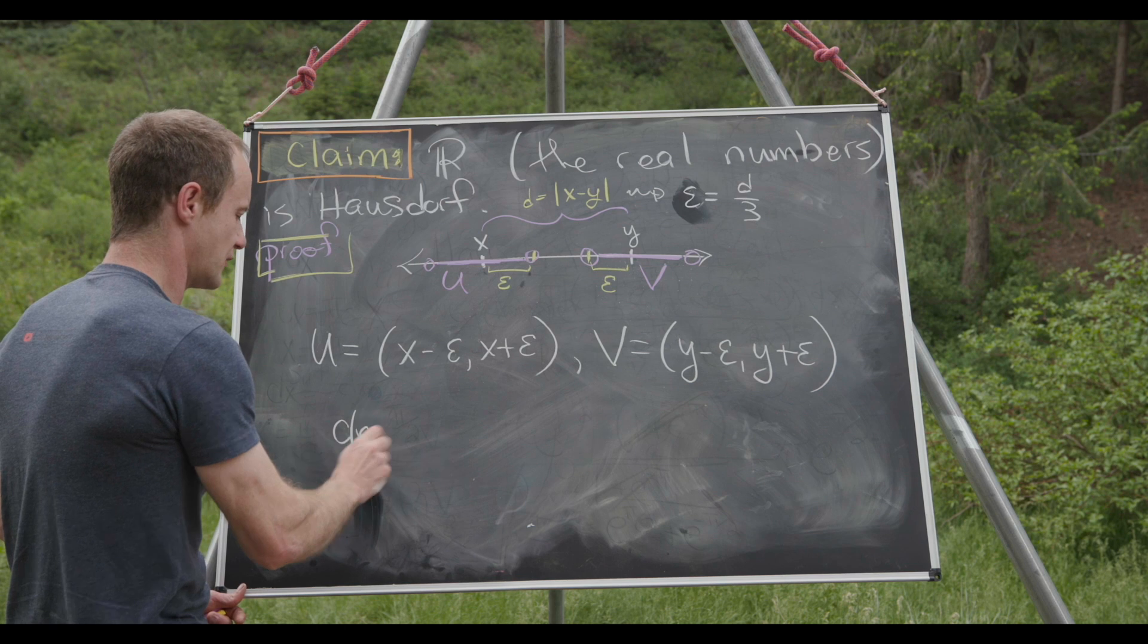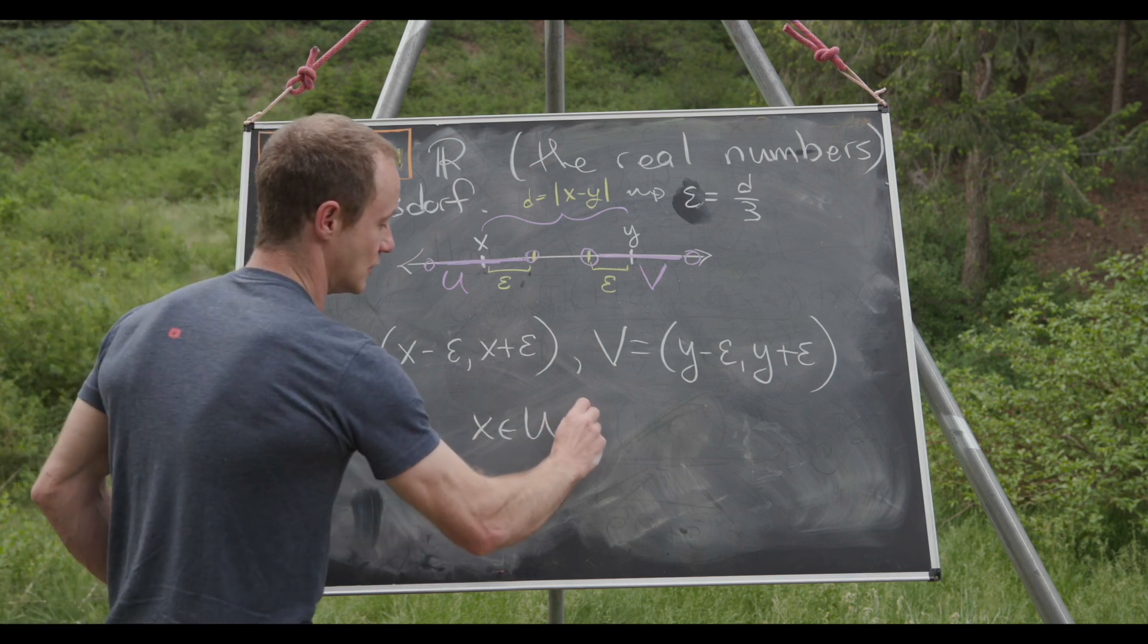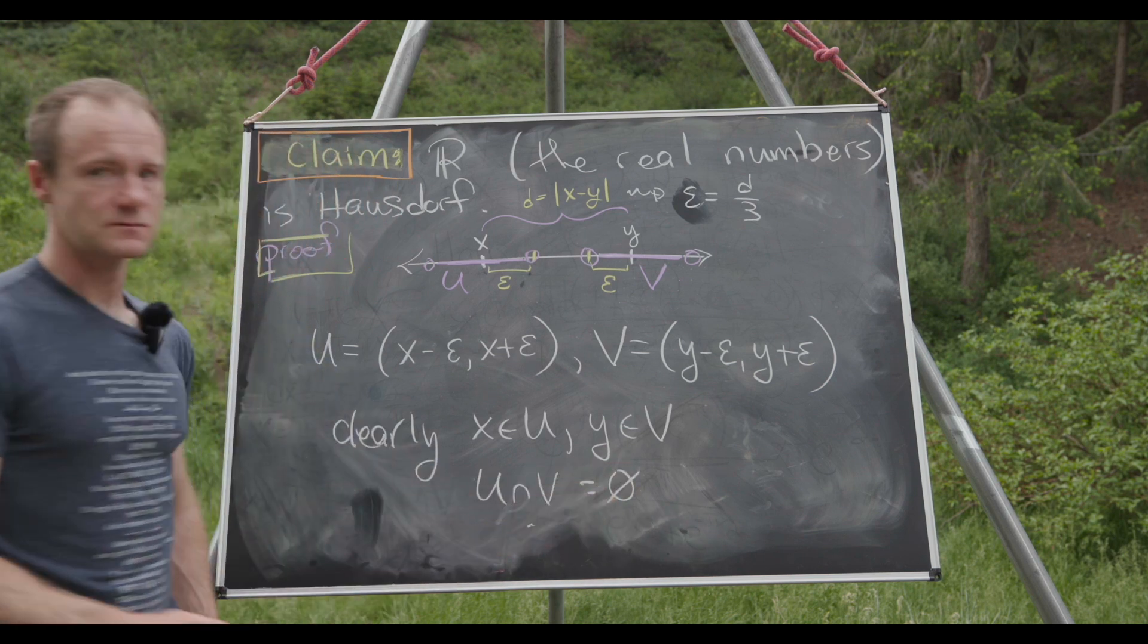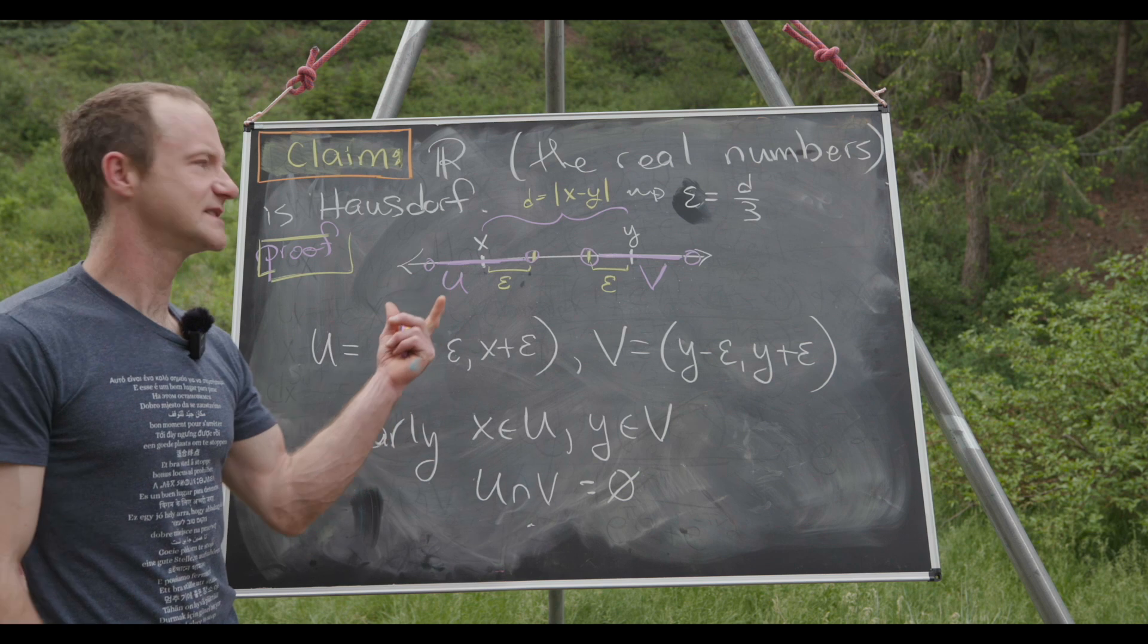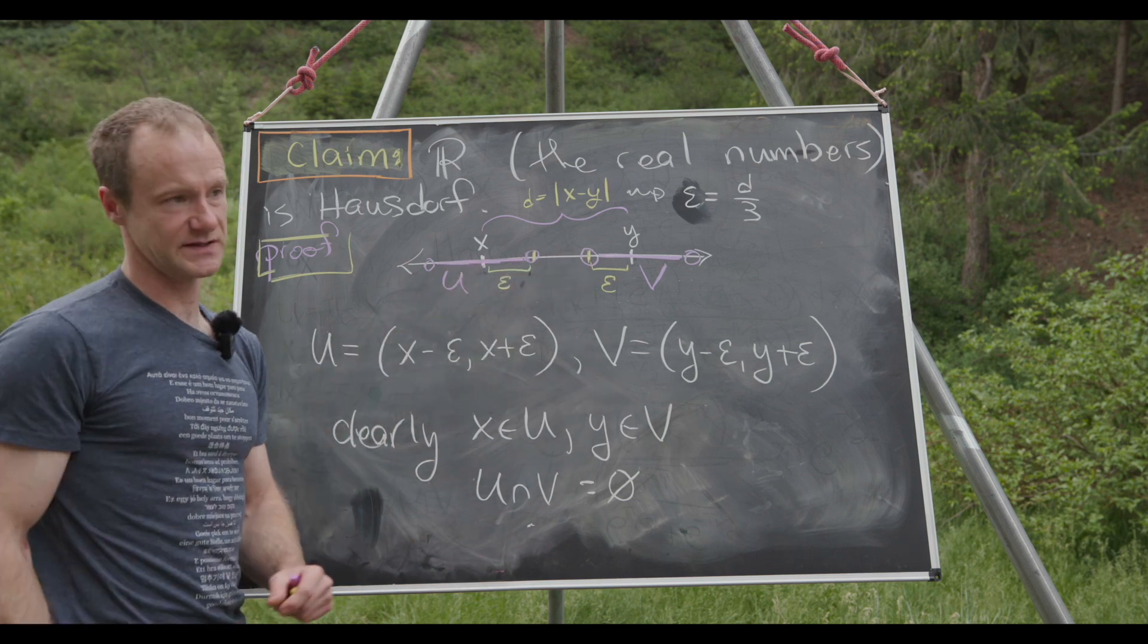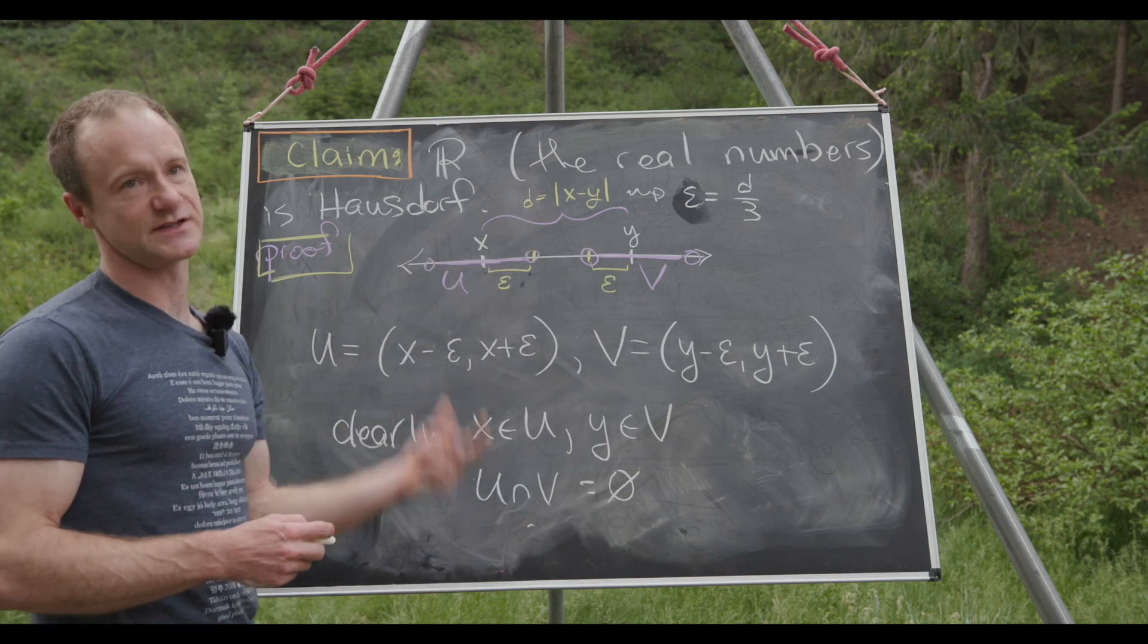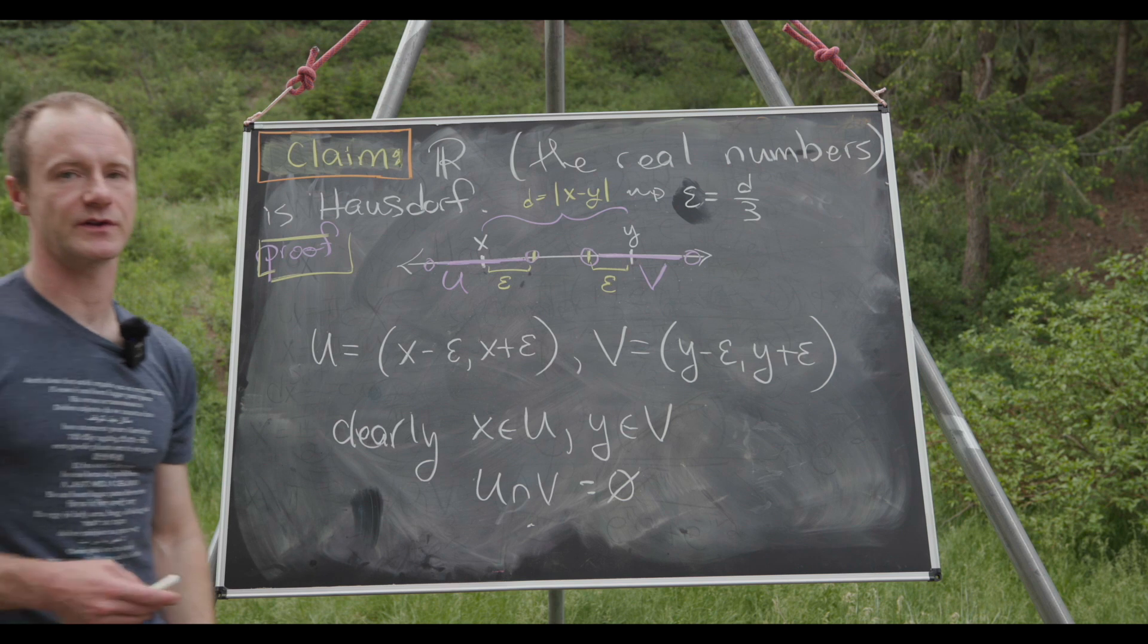And now I think we can pretty much just say that clearly we have x is in U, y is in V, and U intersect V is empty. I guess what would happen if this distance was zero? Well, if this distance was zero then we would have started with two equal points. And I wasn't so careful with the definition, but it's important to start with two unequal points and thus their distance will be non-zero in the standard setup of the real numbers.